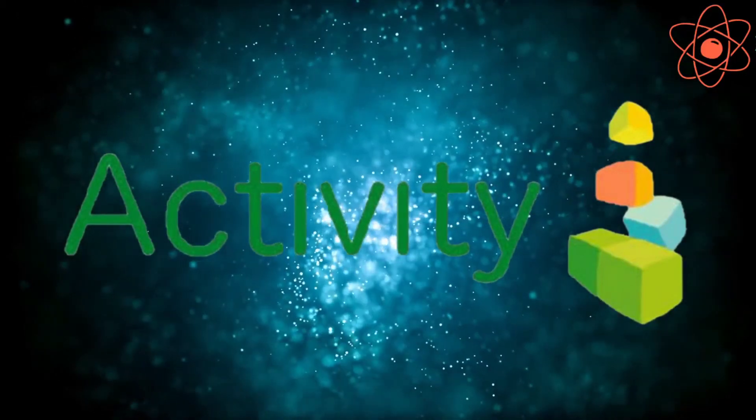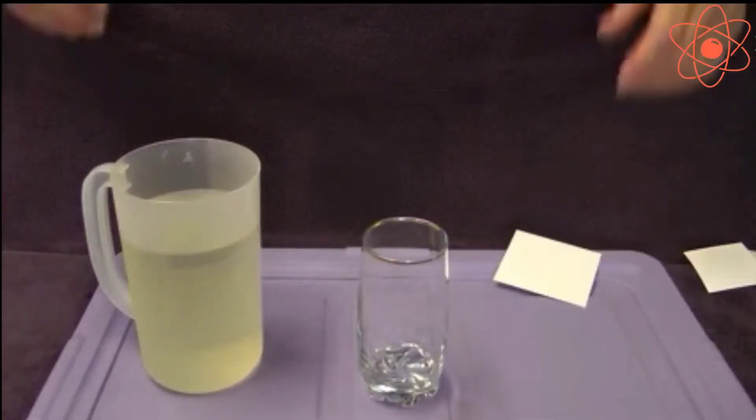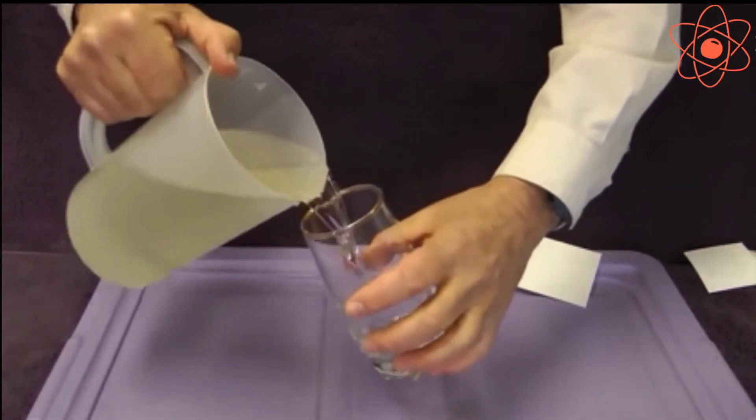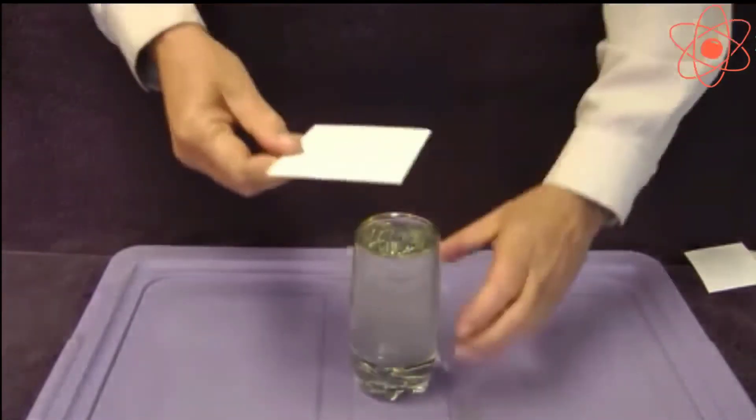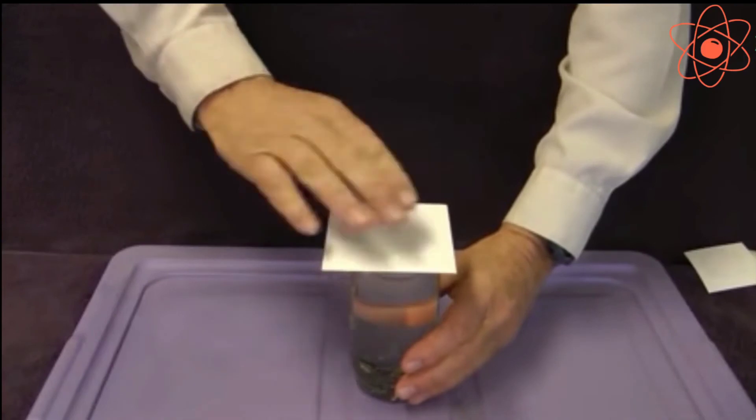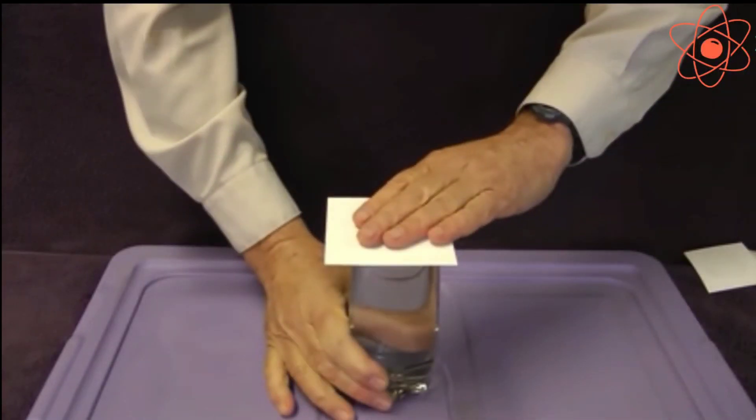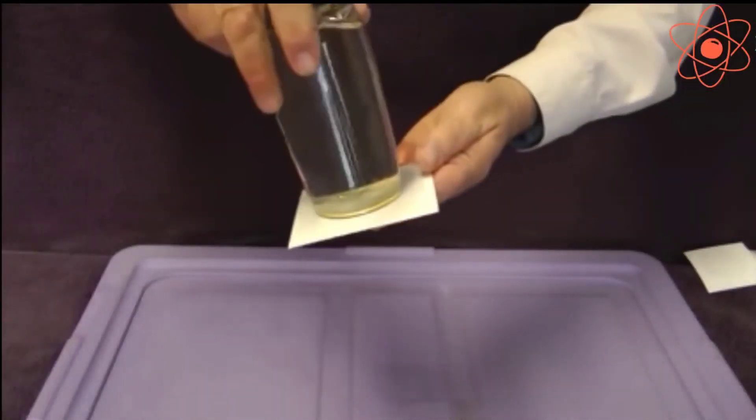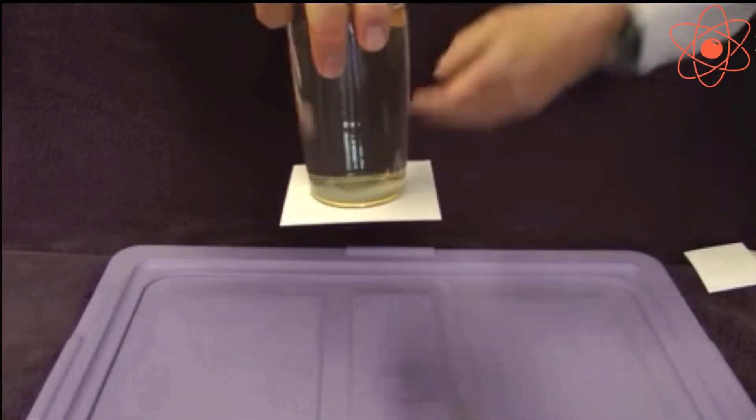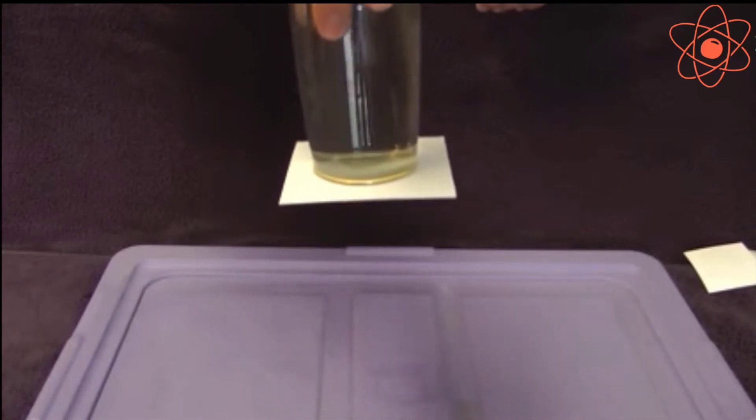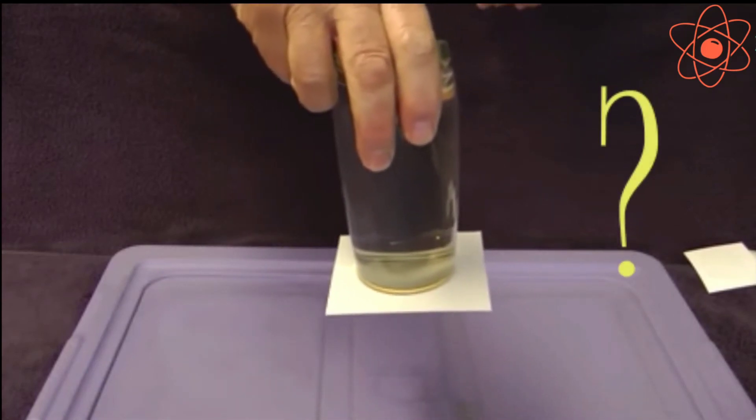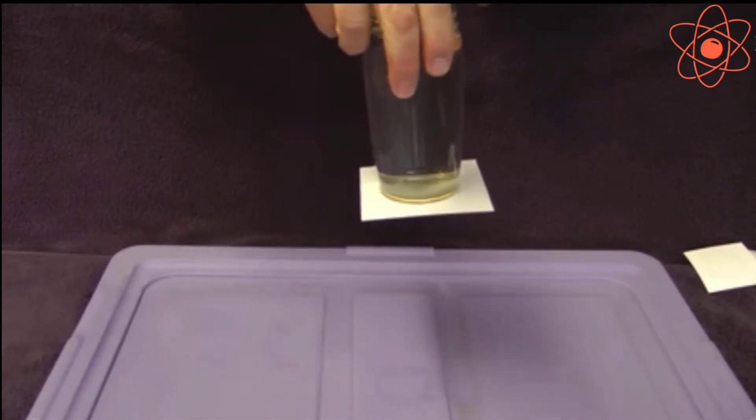Now let us understand this with the help of an activity. Take a glass tumbler and fill it with water. Now place a cardboard on the tumbler and press it on the mouth of the tumbler so that there is no air left inside the tumbler. Hold the tumbler in the hand and invert it upside down. What do you observe?